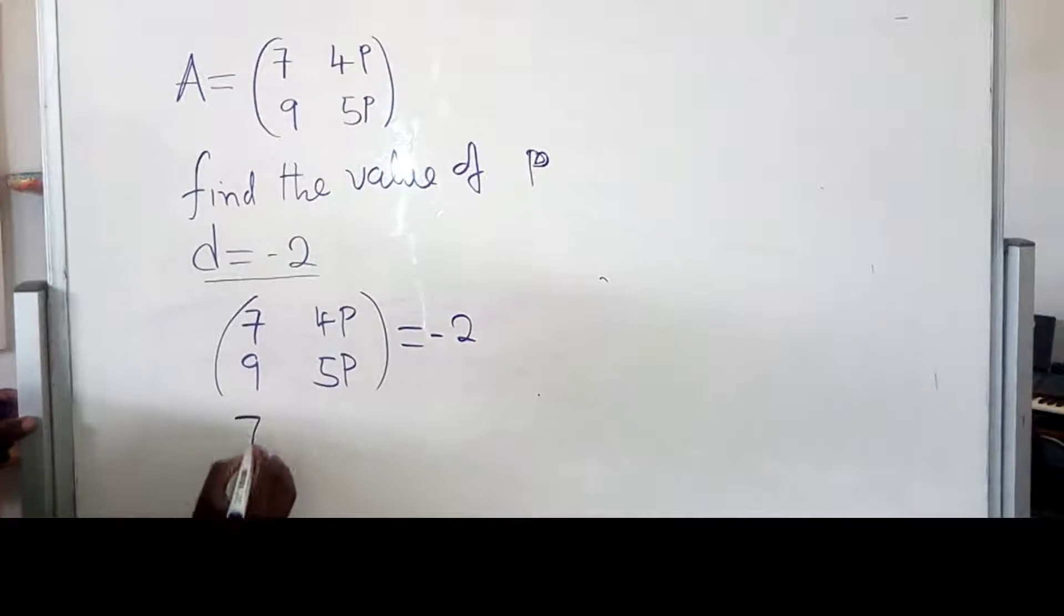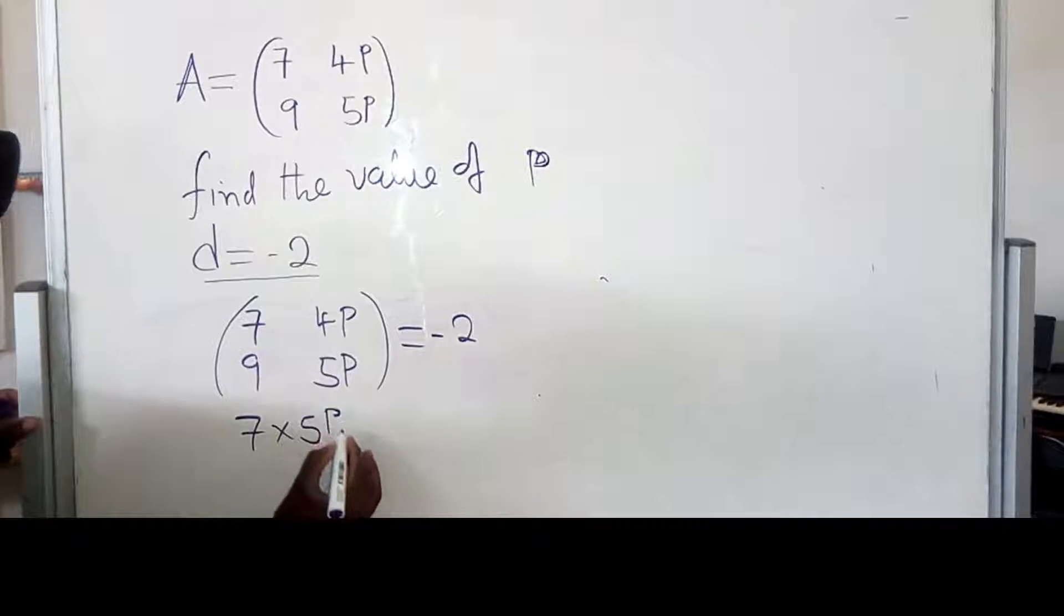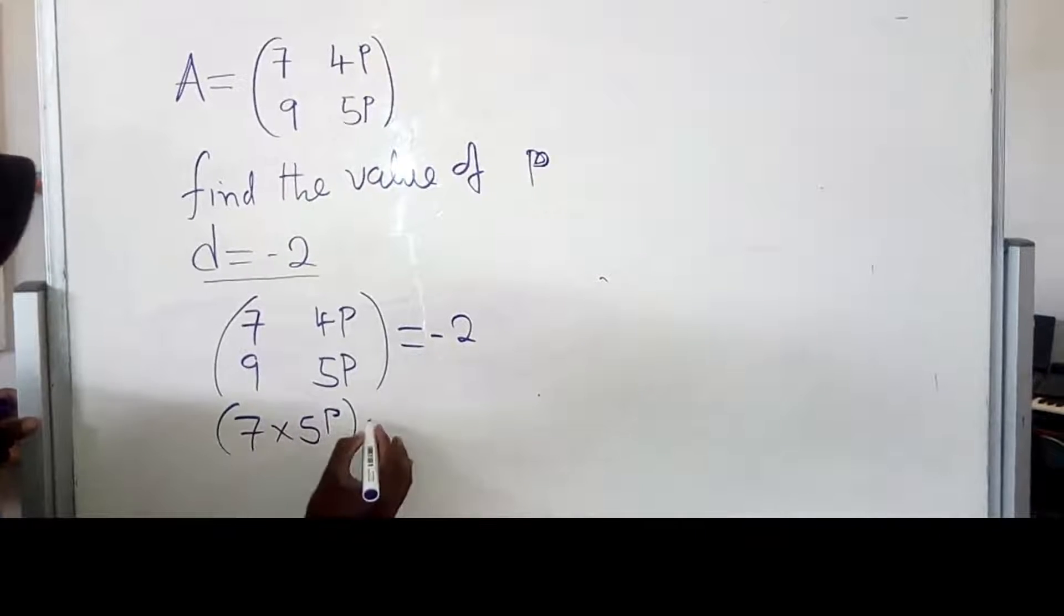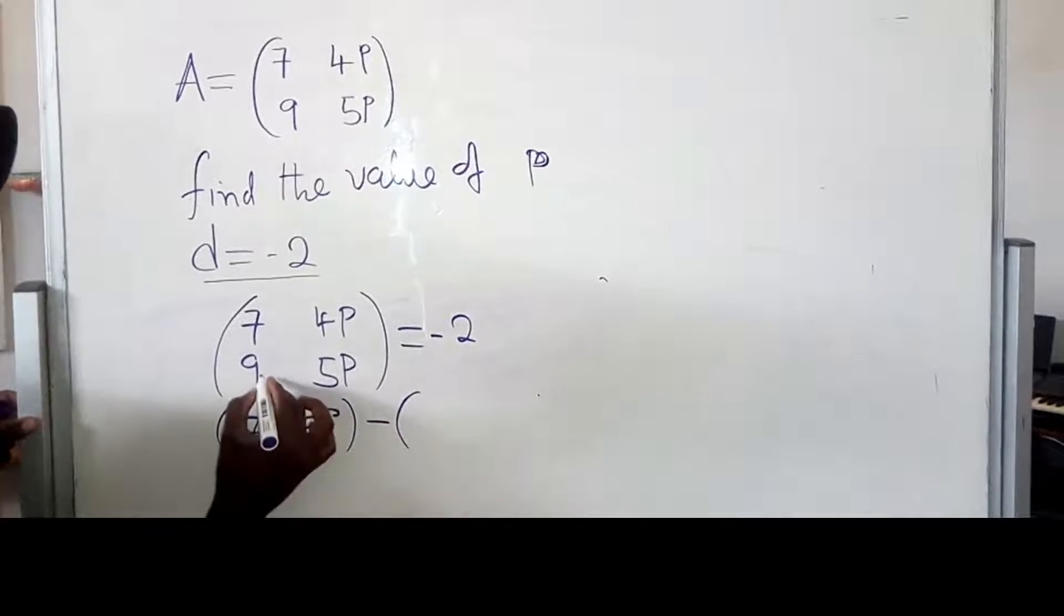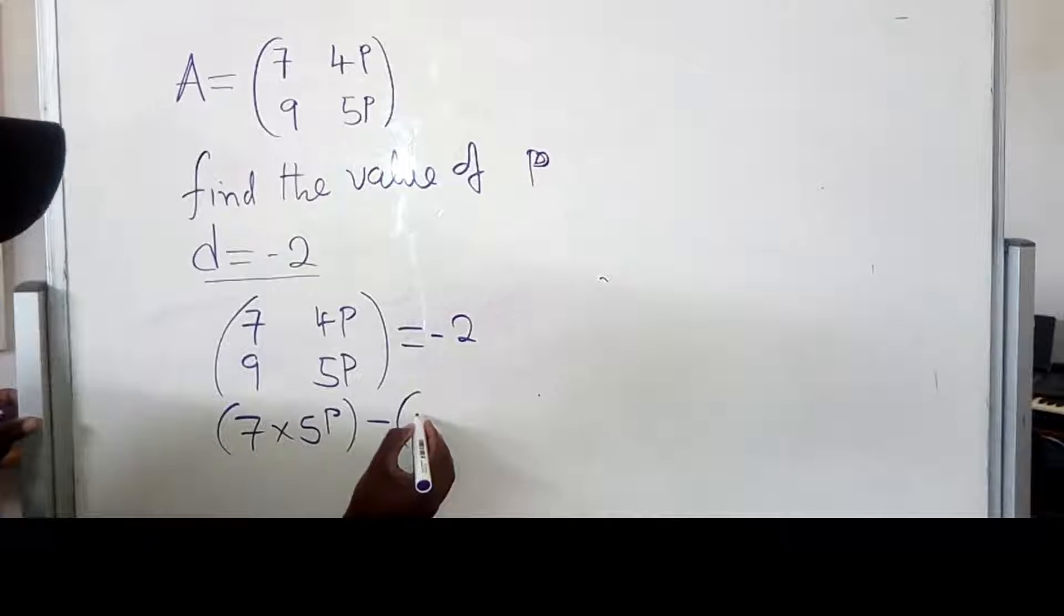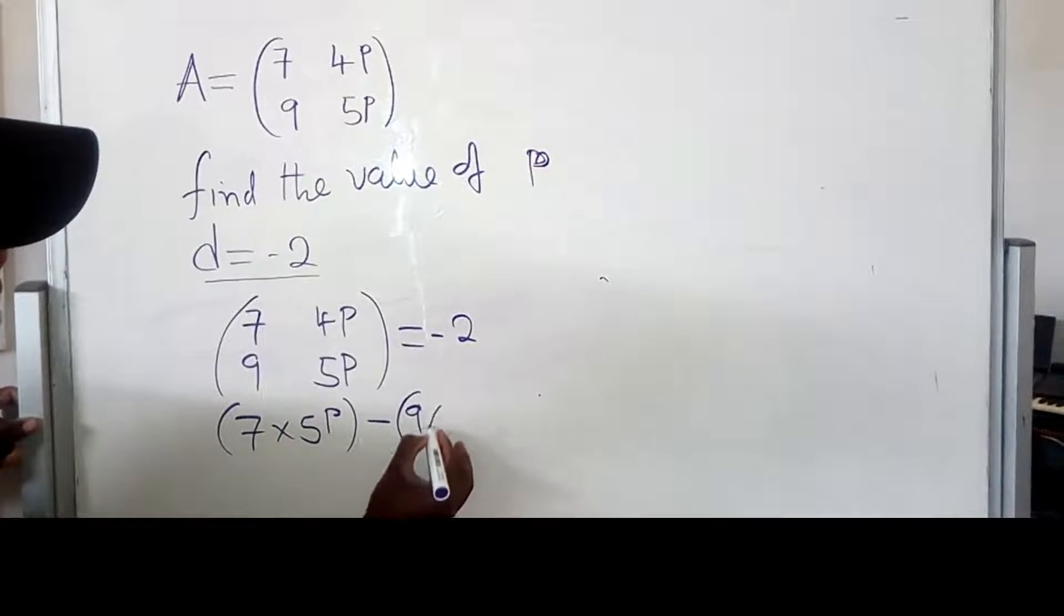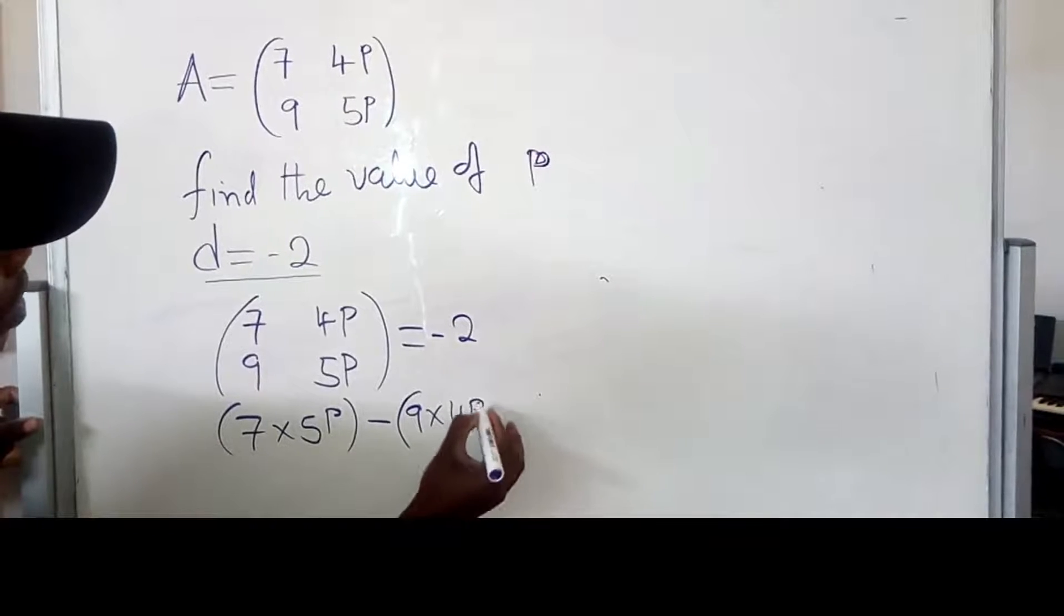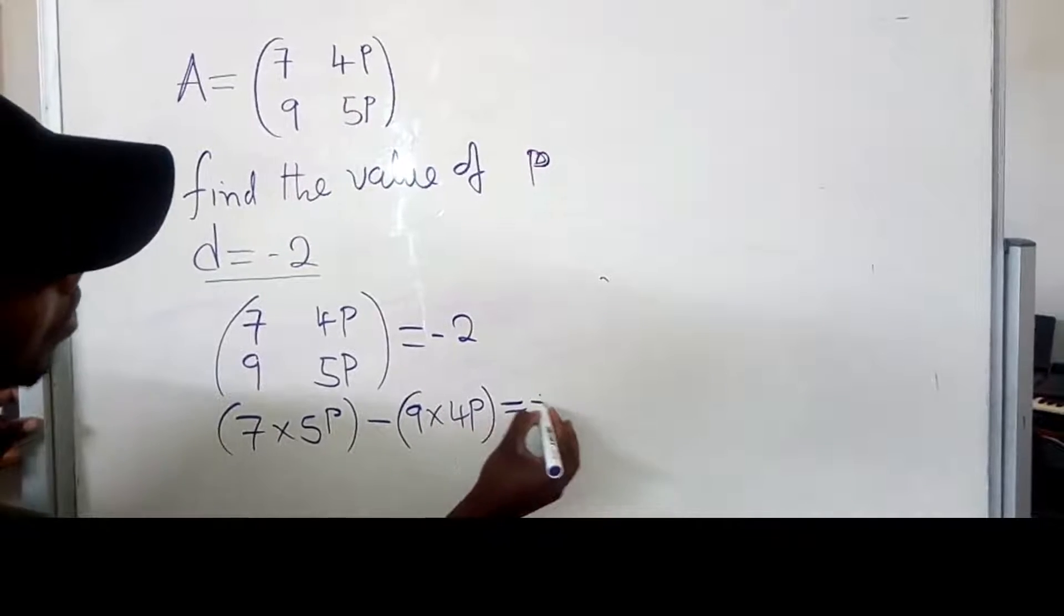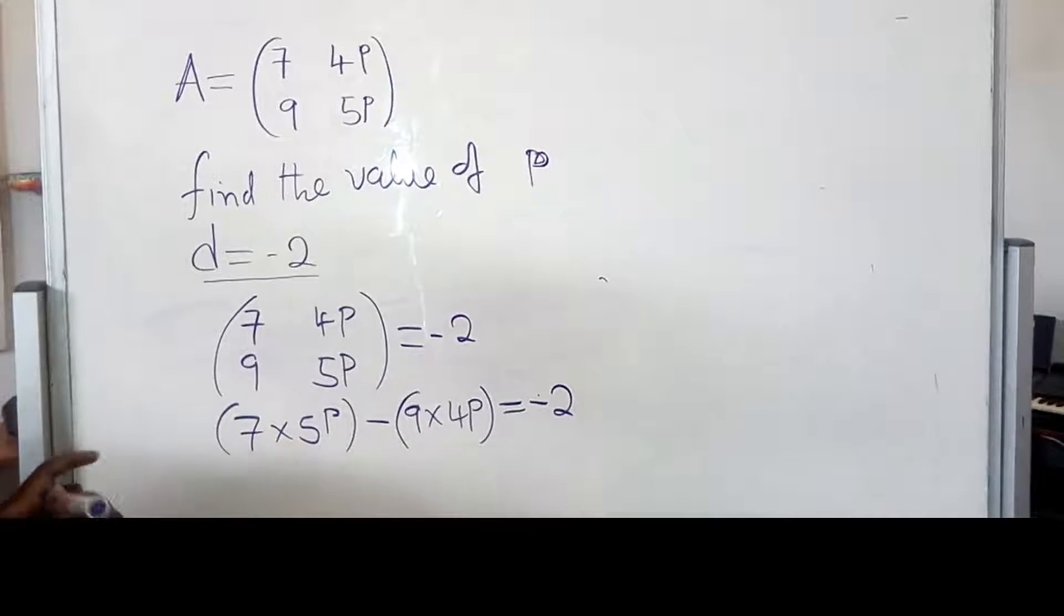So, we use the idea of finding the determinant where we say 7 times 5P minus 9 times 4P, which is equal to negative 2, which is our determinant. So, this is the procedure of finding the determinant.